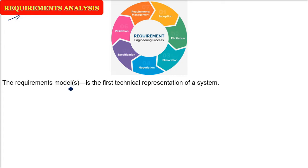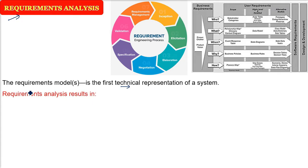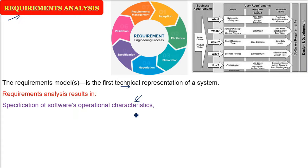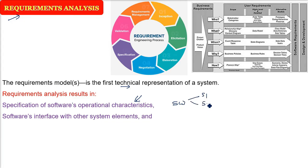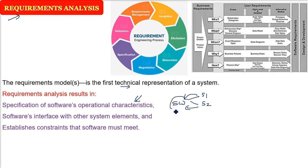The requirement models — there are different ways of doing it. This is the first ever technical representation of a system or software to be built. So when requirement analysis is done, which is the refinement, cleaning, and elaboration of requirements, what do we get? The first thing we get is the software's operational characteristics: when it will operate, what are the functions and features. Because the software will consist of various system elements and various parts, how the interfacing will work. And there will be certain constraints — you have to be inside this boundary. In both ways, this requirement analysis establishes the constraints and the boundary that the software needs to attain and must meet.